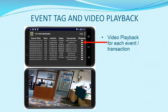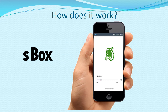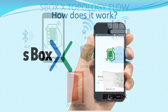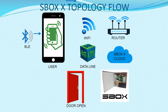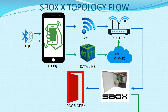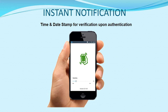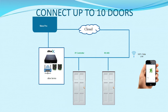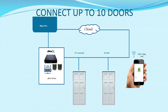Video playback is available for each transaction. Just shake and go to enter the door. S-Box X can use Wi-Fi or Datalink to connect. Instant notification for authorized users. Can connect up to 10 doors, both IP controller and RS-485.